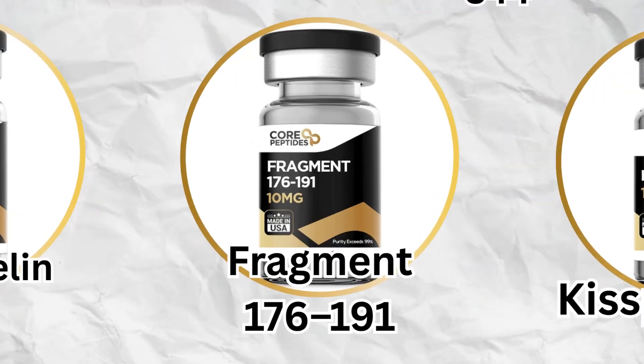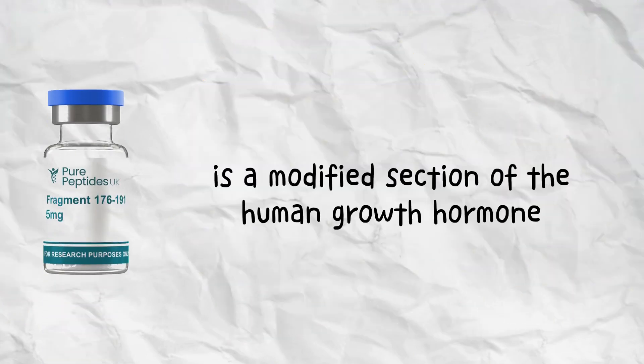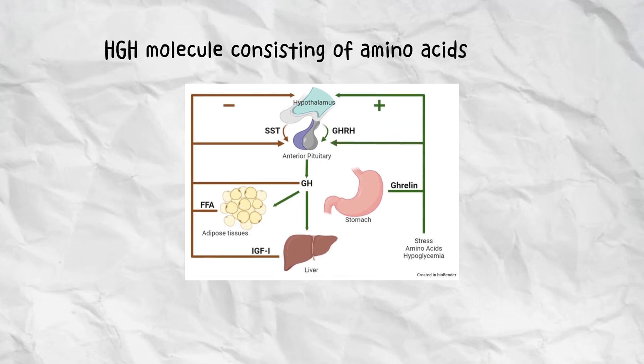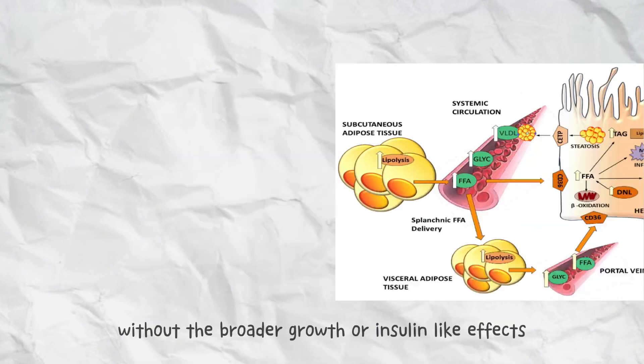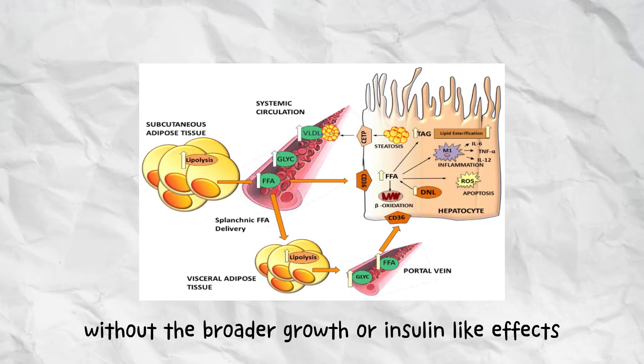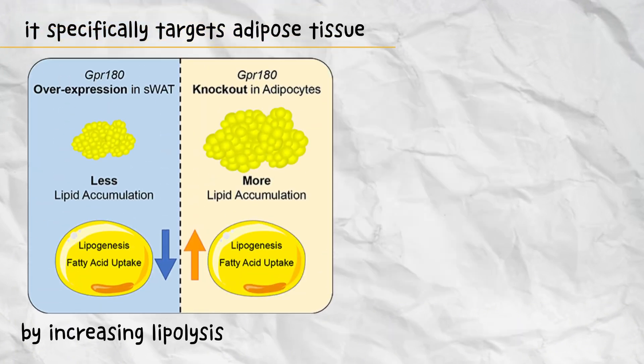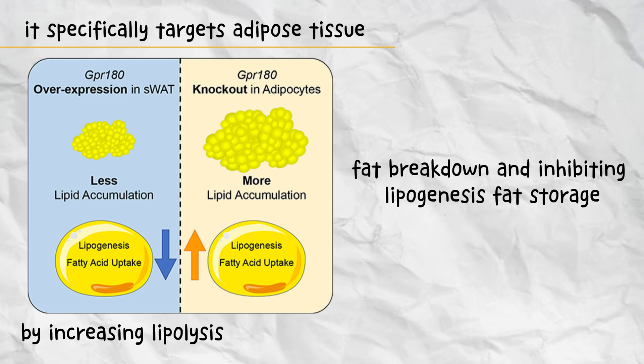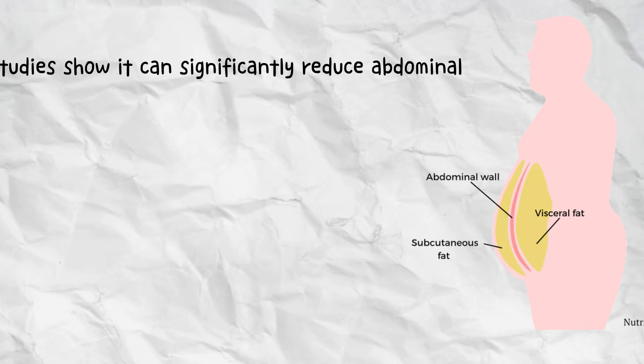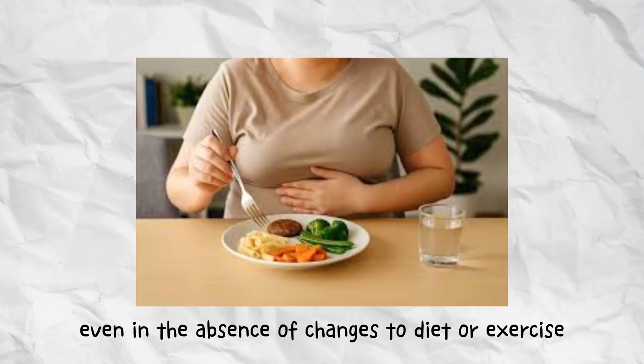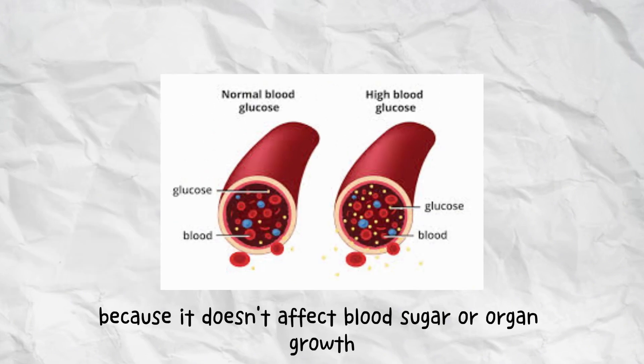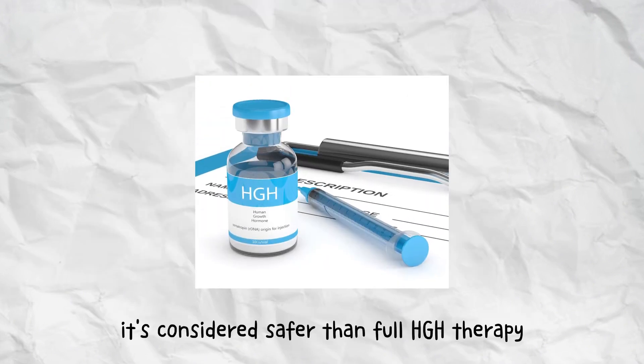Fragment 176-191 is a modified section of the human growth hormone molecule consisting of amino acids 176 through 191. This small fragment retains the fat-burning properties of GH without the broader growth or insulin-like effects. It specifically targets adipose tissue by increasing lipolysis, fat breakdown, and inhibiting lipogenesis, fat storage. Studies show it can significantly reduce abdominal and stubborn body fat, even in the absence of changes to diet or exercise. Because it doesn't affect blood sugar or organ growth, it's considered safer than full HGH therapy.